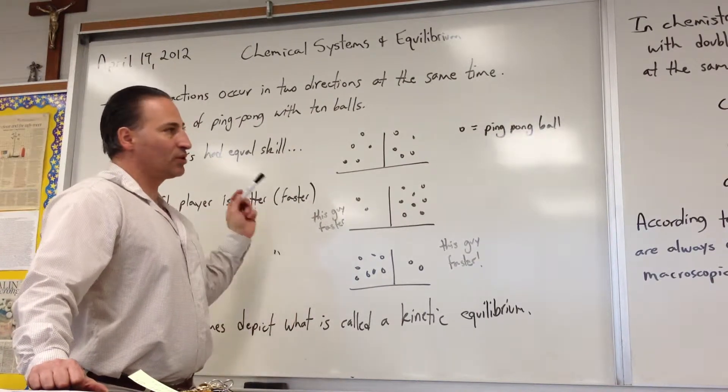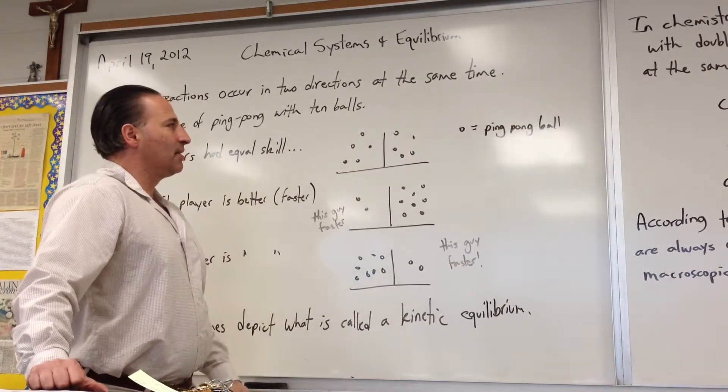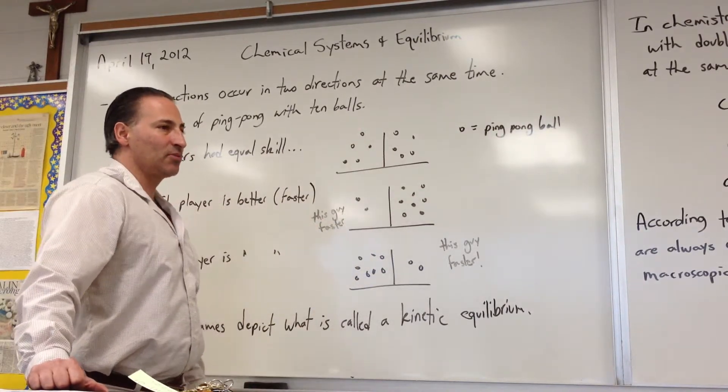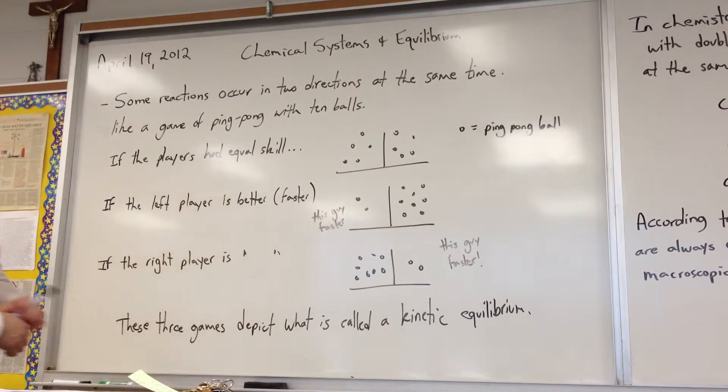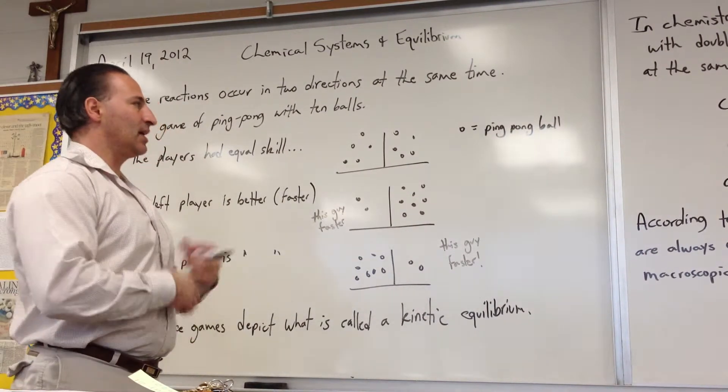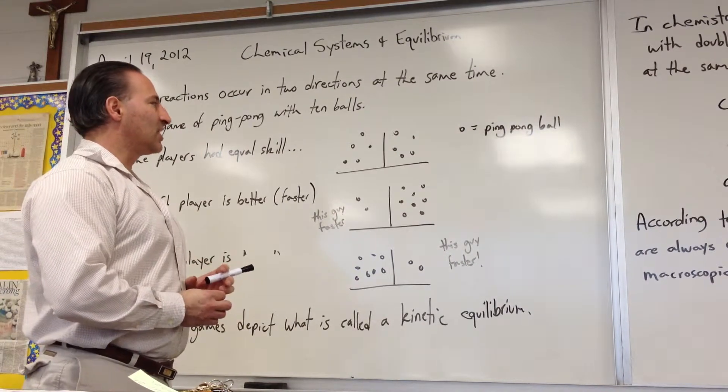So even though they're both shooting balls as fast as they can, because they're both shooting at the same rate at any given moment, they'll have equal numbers on both sides. Even though it's a game where there's motion, kinetic implies motion, so it's a kinetic equilibrium.